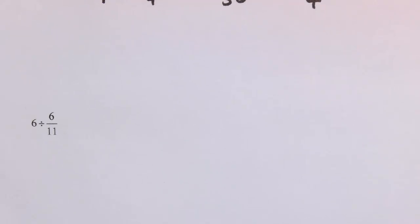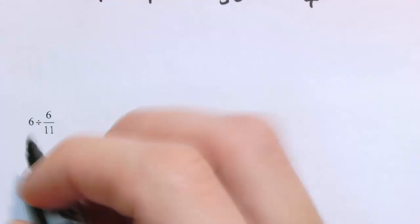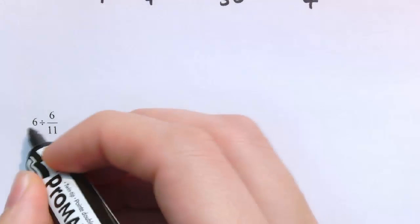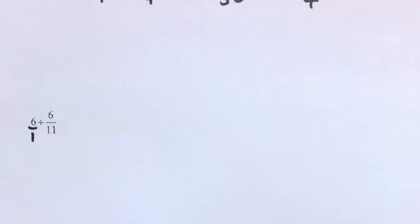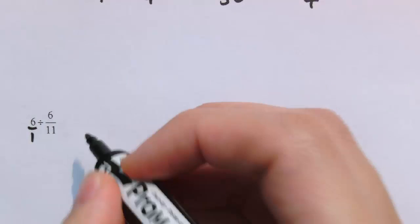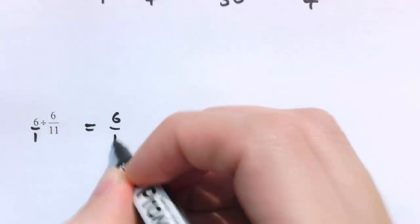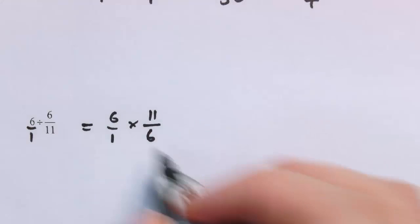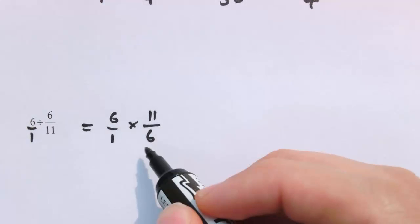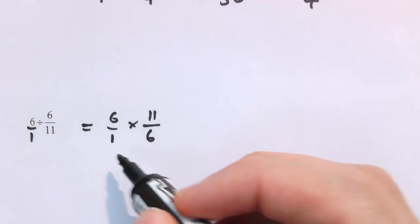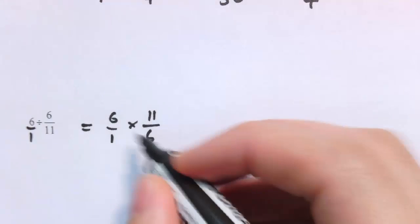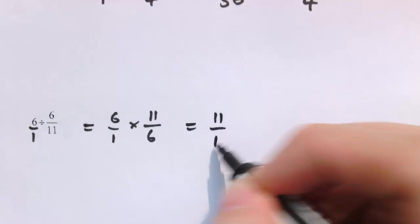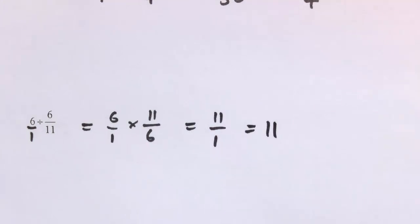A couple of slight special cases. For 6 divided by 6/11, you can think of the integer 6 as 6/1 and then apply the same rules. So we get 6/1 times 11/6, and the 6s cancel to leave 11/1. Remember, we would always write that as just 11.